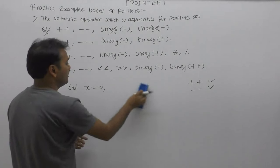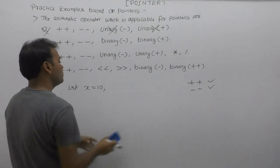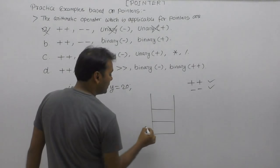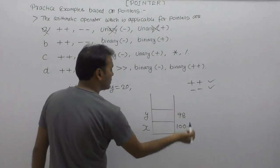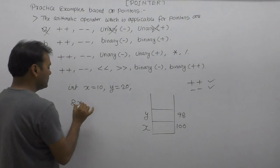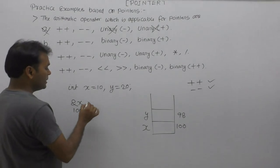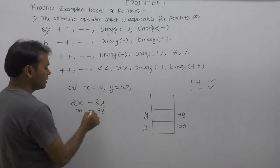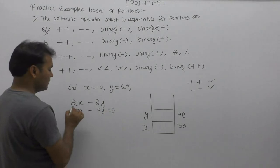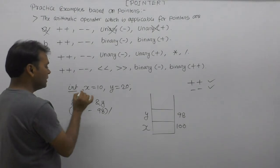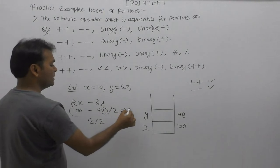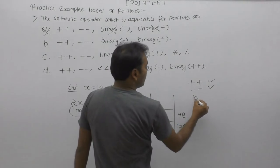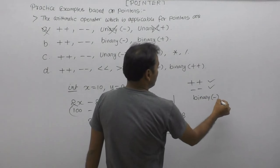Consider two variables: int x equals 10 and int y equals 20. Inside the stack area, x-address is 100 and y-address is 98. We perform address of x minus address of y. The difference between the two addresses divided by the size gives us a meaningful result. So binary minus operation between two pointers is a valid operation.